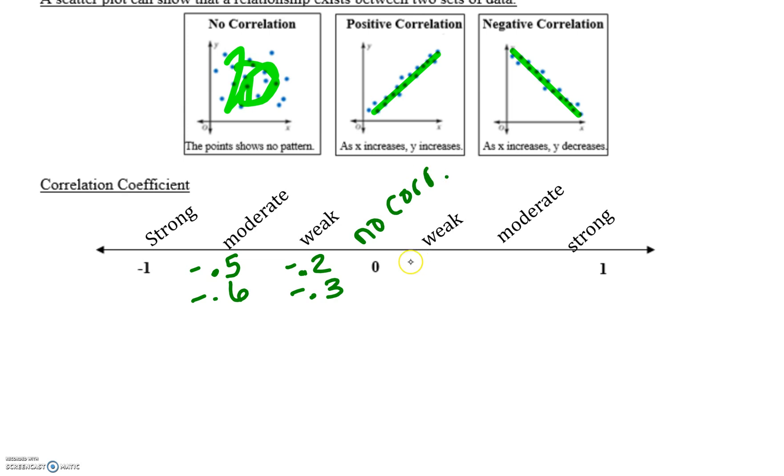For weak positive, same thing, but positive version. So like 0.2, 0.3, moderate is more like 0.5, 0.6-ish. And then the strongs would be more of those 0.8s to 0.9s. And then 1 is absolutely perfectly straight, which we typically don't see.